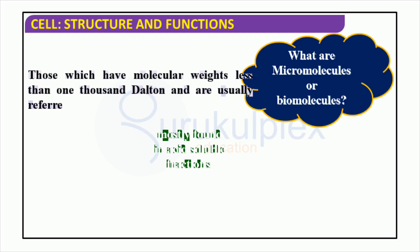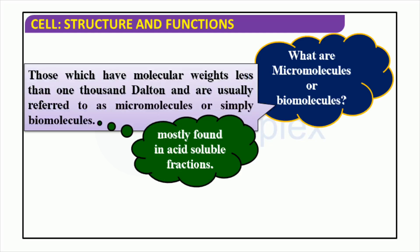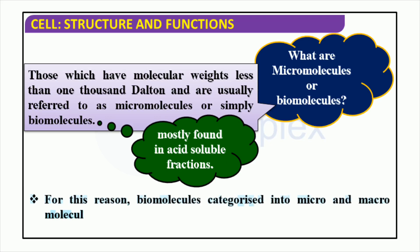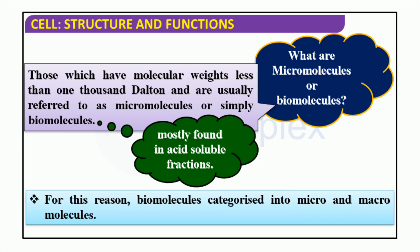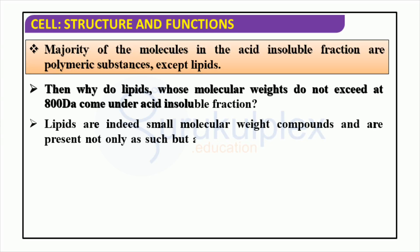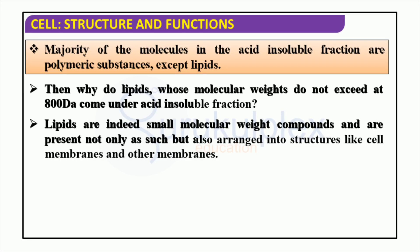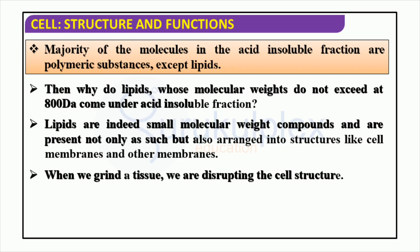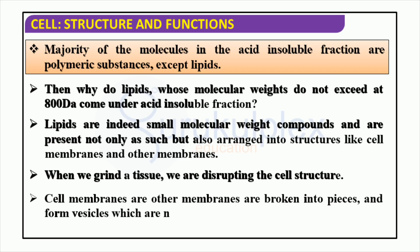Biomolecules with molecular weights below 1,000 daltons are mostly found in acid-soluble fractions. Carbohydrates, amino acids, lipids, vitamins and hormones are some of them, and they are essential for cell maintenance and growth. Lipids are a unique type of molecule found in the acid-insoluble fraction. Even though they are relatively small molecules, they can form structures such as cell membranes. When tissues are ground up, it leads to disruption of the membrane structures, making the lipids easily soluble in acid, which makes them stand out from other polymeric substances.